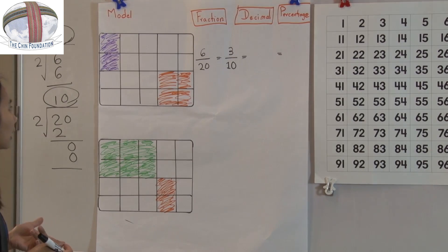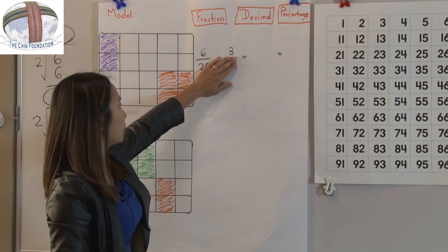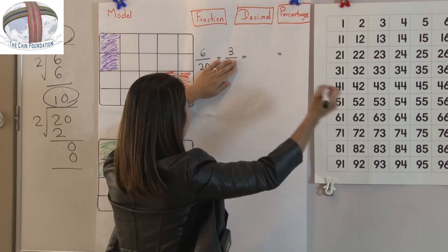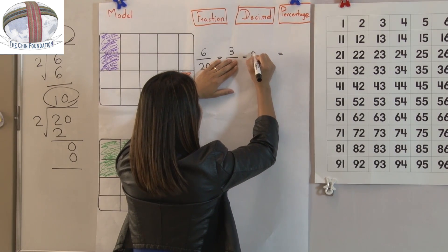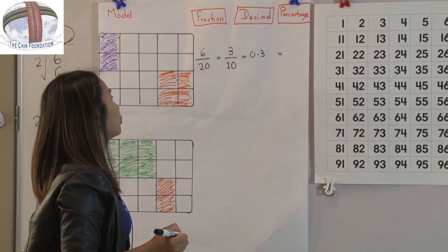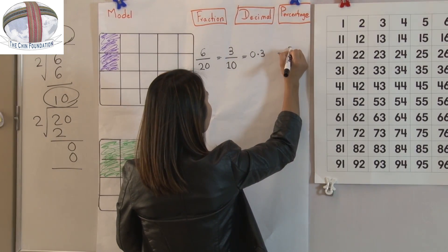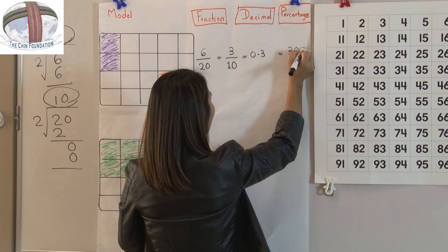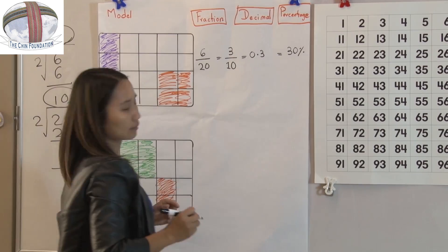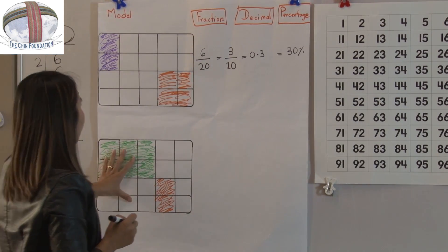Now we have to think about decimal and percentage. Remember, when we do decimal and percentage, pay attention on the numerator. The numerator is 3. When we write percentage, we have to write 30 out of 100. So that is 30 percent. Alright, let's do the next problem.